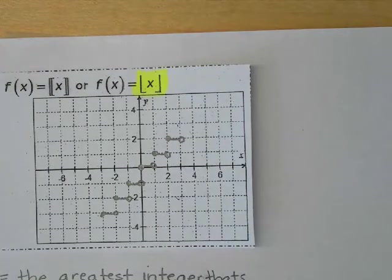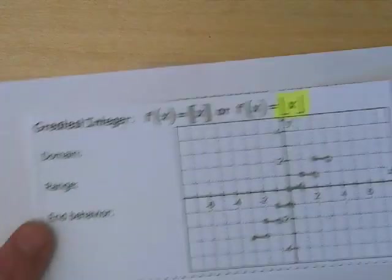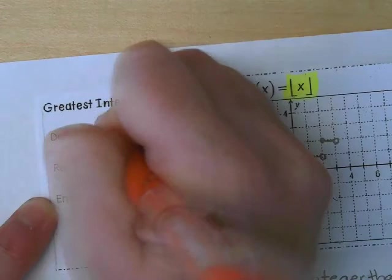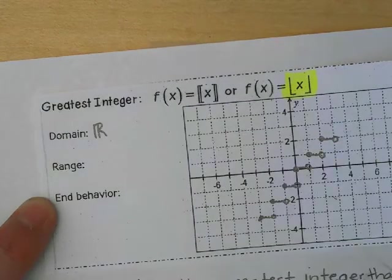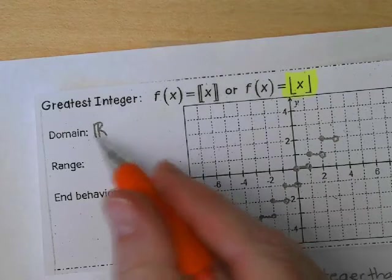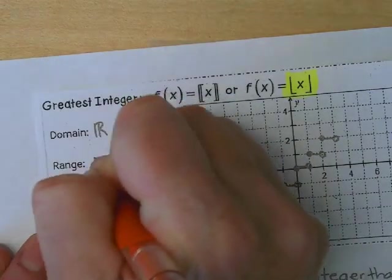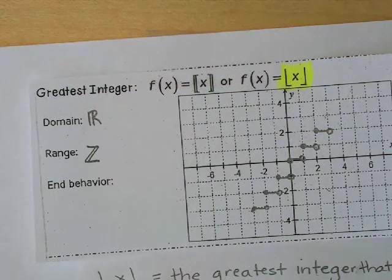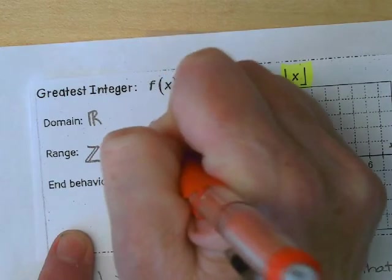So let's look at domain and range. Well, we could put any number that we want in for the domain. We could do anything that we want there. So I'm going to say that its domain is going to be all real numbers. So I could just use the double bar R to indicate the set of all real numbers. And the range is only going to be integers. Now, you would think that if the domain, if real numbers are R, that the range would be I for integers, but it's not. It's Z. And we kind of have a double bar Z. So that's something to kind of note that that means all integers.